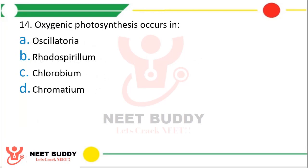Question 14. Oxygenic photosynthesis occurs in which organism — Oscillatoria, Rhodospirillum, Chlorobium, or Chromatium? The correct answer is option A, that is Oscillatoria.